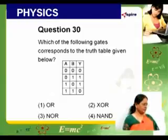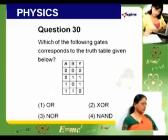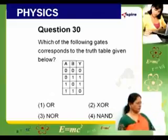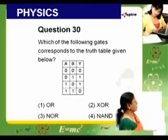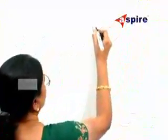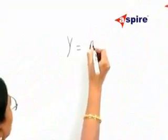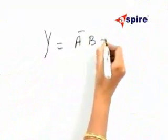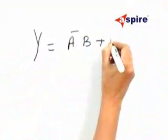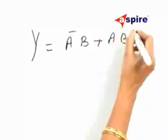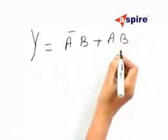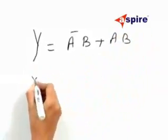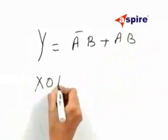Problem 13: which of the following gates corresponds to the truth table given? Looking at the truth table, we can write the Boolean expression as y equals ā·b plus a·b̄, which corresponds to the Boolean expression of the XOR gate.